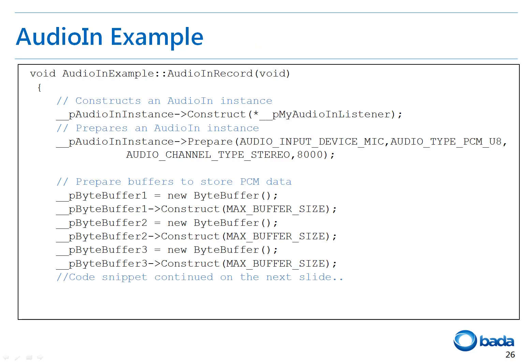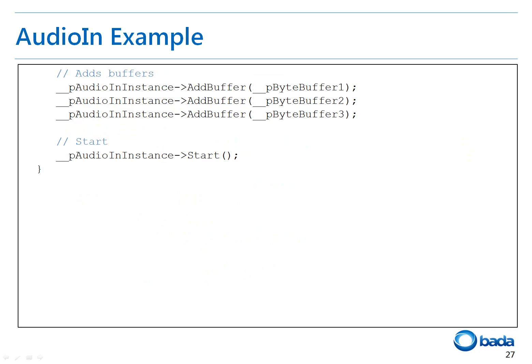Let's look at how to use the AudioIn class for recording PCM data from the device microphone. In line 4, the AudioIn instance is constructed with the AudioInEventListener, which implements iAudioInEventListener. In line 6, the AudioIn instance prepares the specified audio input device with application-defined settings. In lines 9-14, the input buffer for the audio input device is constructed. In lines 17-19, the input buffers are sent to the specified input device. In line 22, audio data from the input device is read and filled into the input buffer.